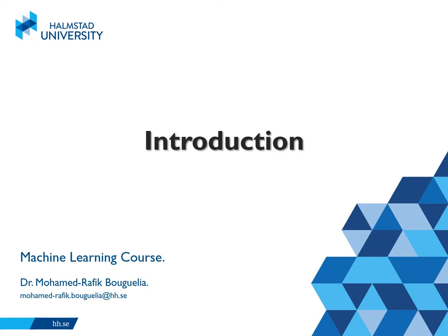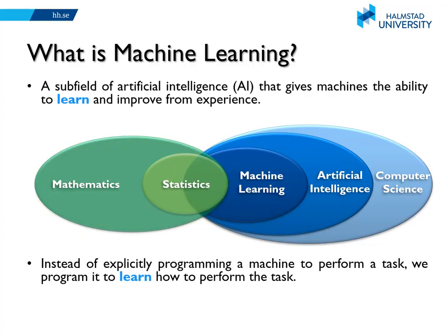Let's start this course with a simple introduction about machine learning. So what is machine learning? As one can expect, it's a subfield of artificial intelligence, also at the intersection of several other domains like statistics and mathematical optimization. It gives machines the ability to learn and improve from experience. Instead of programming a machine to perform a task, we program it to learn how to perform the task.